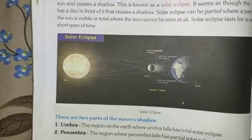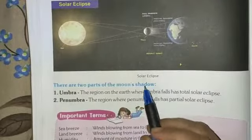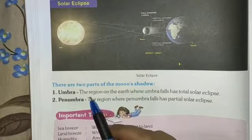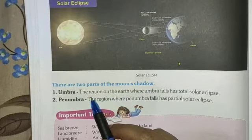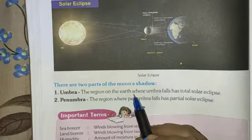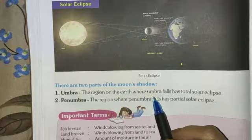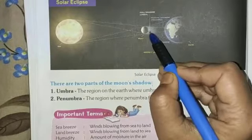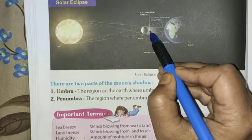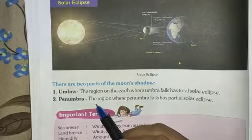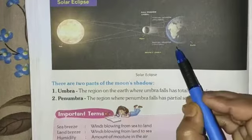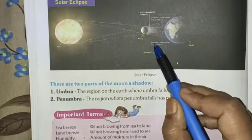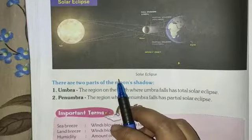I hope you have understood the solar eclipse. In the same way as with lunar eclipse, there are two parts of the moon's shadow. That is umbra — the region on the earth where umbra falls has a total solar eclipse. Here it is, total solar eclipse. And the penumbra — the region where penumbra falls has a partial solar eclipse. Here it is, partial solar eclipse.